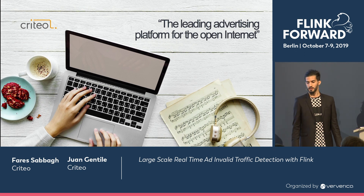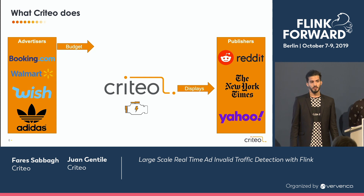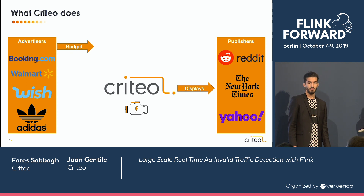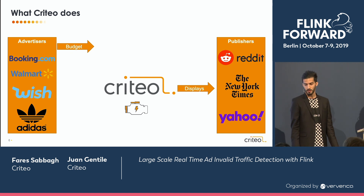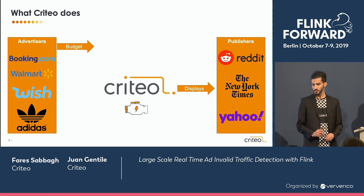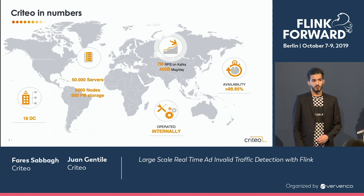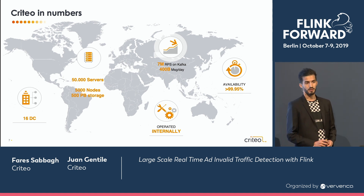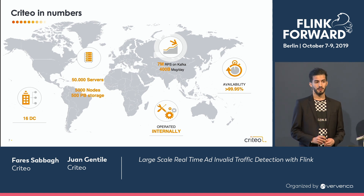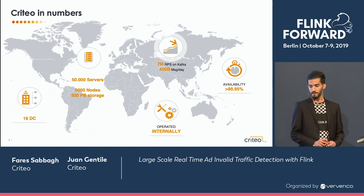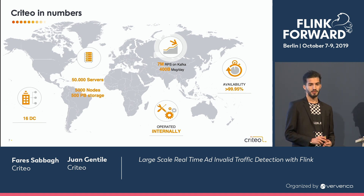Criteo is an advertising company. Basically, it makes the bridge between advertisers and publishers. When an advertiser wants to make a digital campaign, it will call Criteo, give them a budget and a catalogue, and Criteo will choose the right product to display in front of the right people. To give you a sense of the volumetry we have to deal with, here are some numbers: we have 16 DCs worldwide, all operated internally, more than 50,000 servers worldwide, and about 400 billion messages per day.